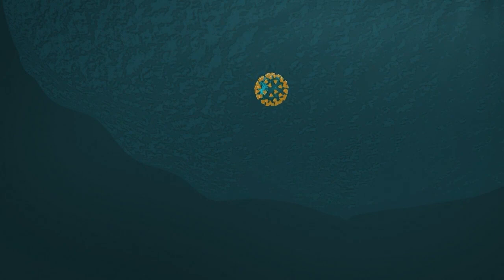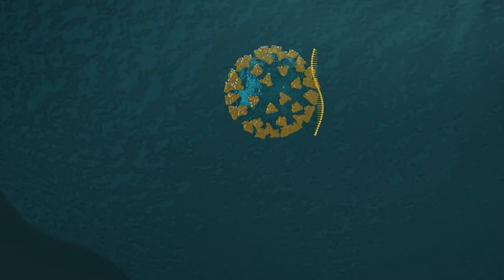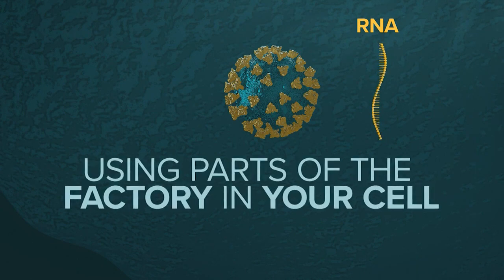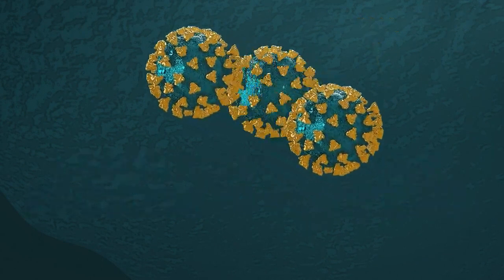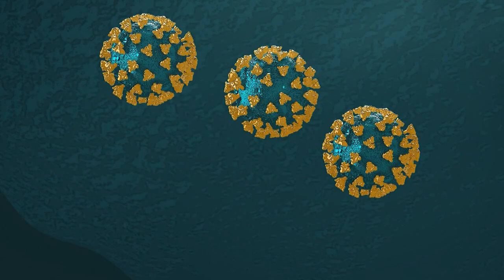Inside the human cell, the virus starts uncoating, releasing its RNA. This starts a process that ends up using parts of the factory in your cell to make new copies of the virus, and more copies, and more copies.